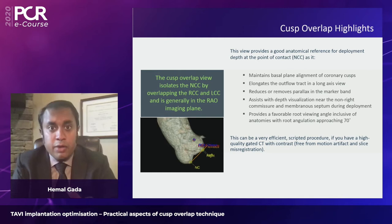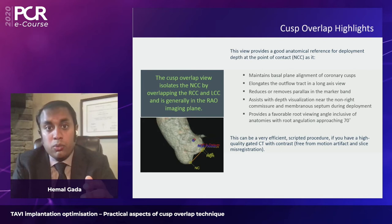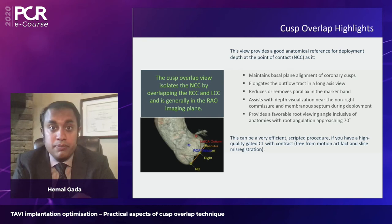We overlap the right and left coronary cusps, leaving the non-coronary cusp independent. This morphs the three-dimensional structure into two dimensions, giving a more valid and reliable visualization of the true insertion of the non-coronary cusp. This elongates the outflow tract and provides a clear representation of depth relative to the non-right commissure and the conduction system below. Additionally, the stiff wire parks itself at the apex of the non-right commissure.